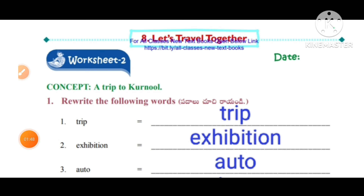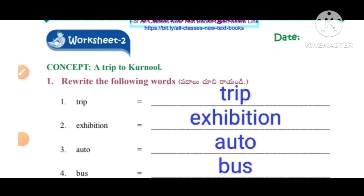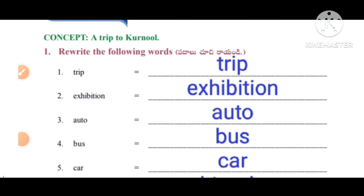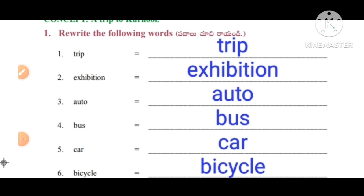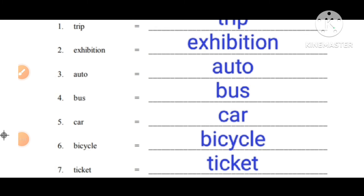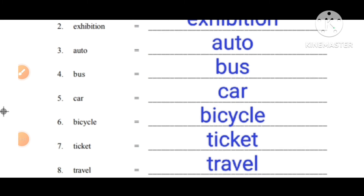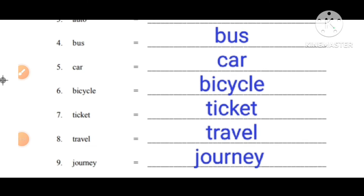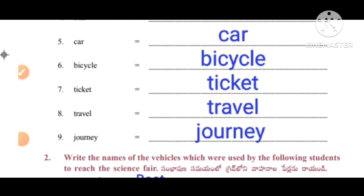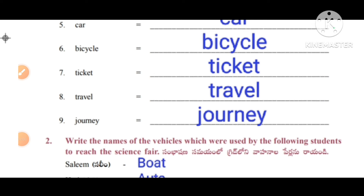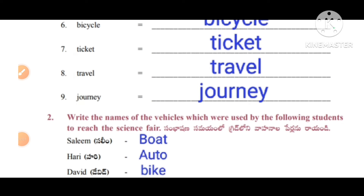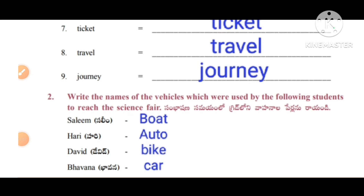Worksheet number 2, concept: a trip to Karnool. Rewrite the following words. First one: trip, exhibition, auto, bus, car, bicycle, ticket, travel, journey.